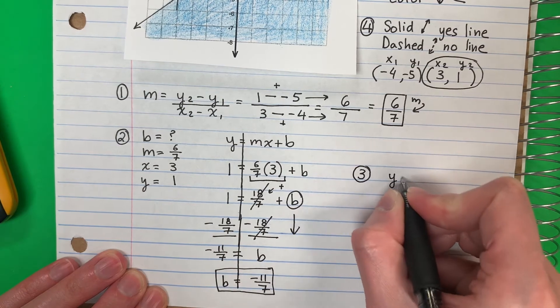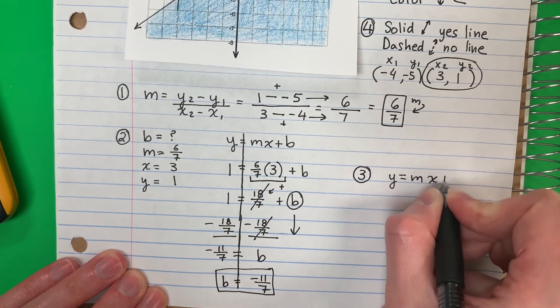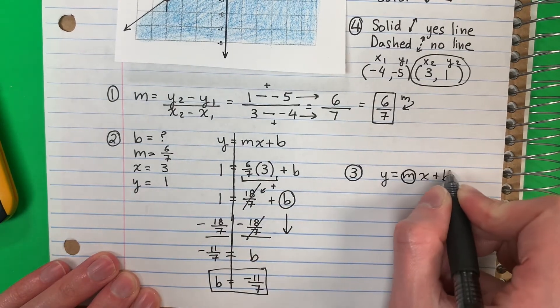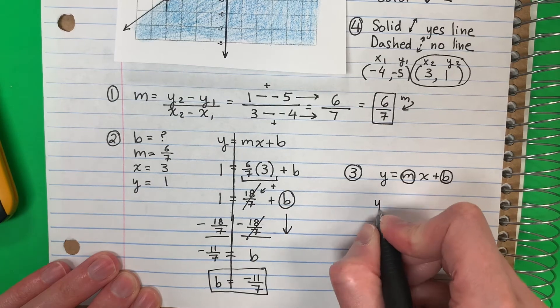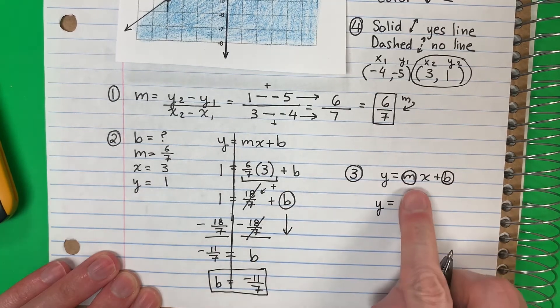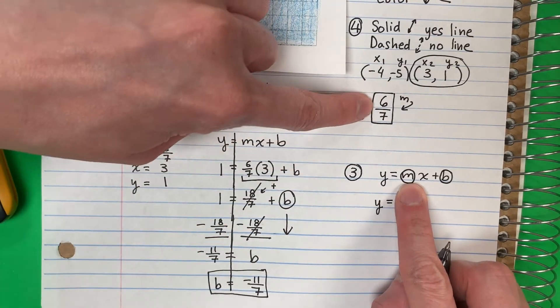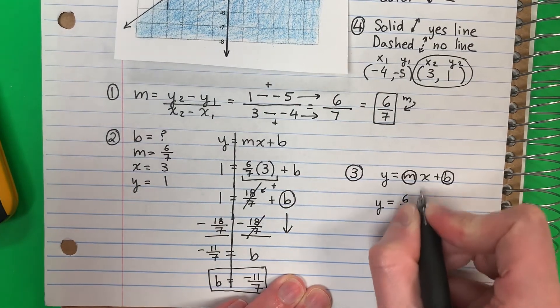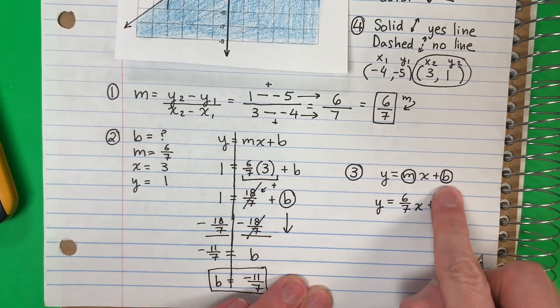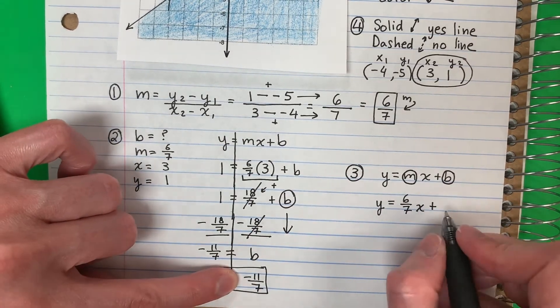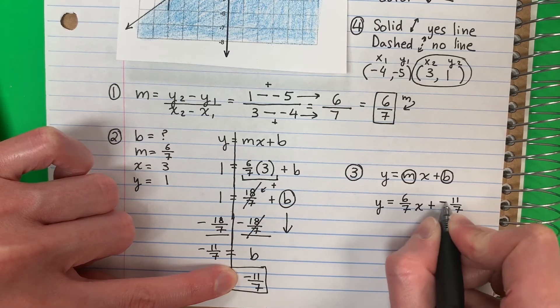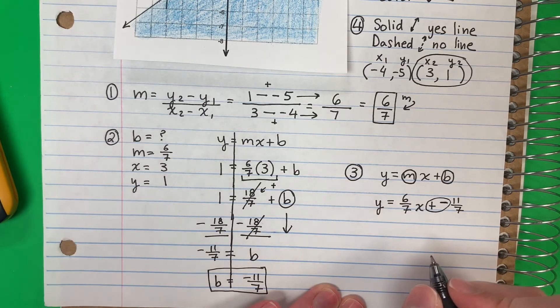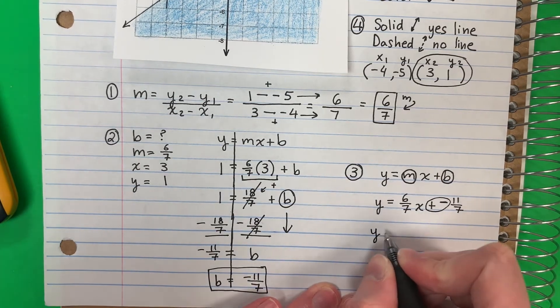I need to put it in slope intercept form: y equals mx plus b. Remember only m and b change, solo m y b cambia. So I'm going to copy y, copy equals. m is six sevenths. Copy x, copy plus. b is negative eleven sevenths. Plus and minus, mas y menos, is minus. So I will copy y equals six sevenths x minus eleven sevenths.